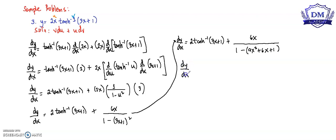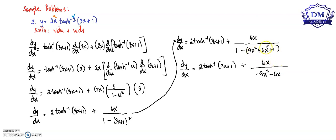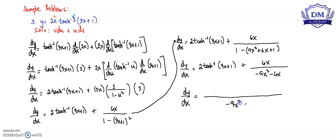This simplifies to 2 times the inverse hyperbolic tangent of (3x plus 1) plus 6x all over negative 9x squared minus 6x, since 1 minus 1 equals 0. Combining, we can write dy/dx as 2 times the inverse hyperbolic tangent of (3x plus 1) plus 6x, all over negative 9x squared minus 6x.